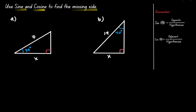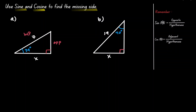In the example on the left, we are looking for the bottom side. Let's start by identifying our reference angle, which is 39 degrees. And then let's label our triangle using this reference angle. Opposite of 90 degrees, that's our hypotenuse. Opposite of the reference angle, that's the opposite side. And the bottom side is our adjacent.